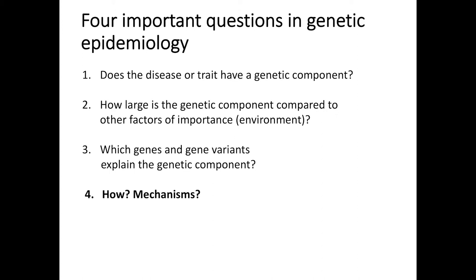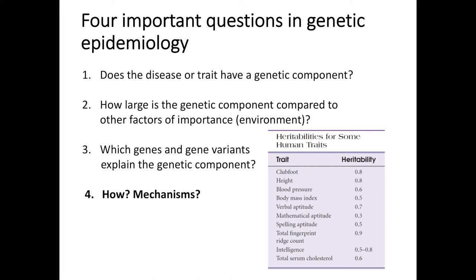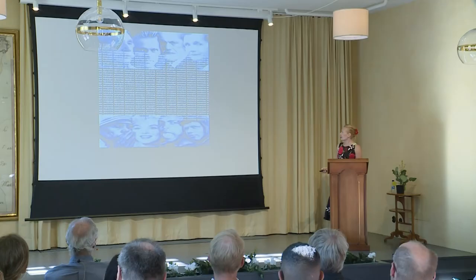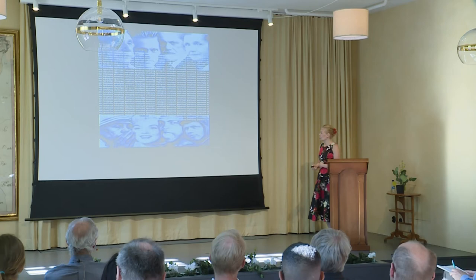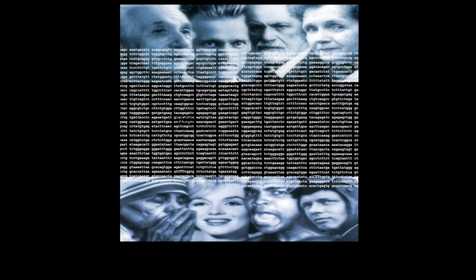Here are some heritabilities for human traits. Around 50% of body mass index and obesity is because of genes. Intelligence is 50–80% depending on what you measure. Serum cholesterol is 60%. Why doesn't Marilyn Monroe look like Mother Teresa, or Mother Teresa like Albert Einstein? It's very much because of these letters — ACTG in our genome, the genetic code.